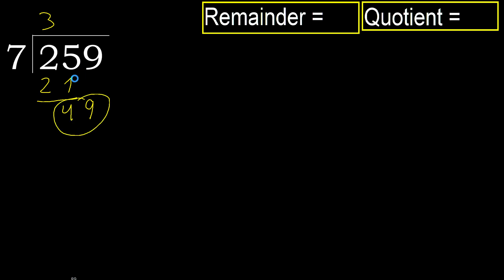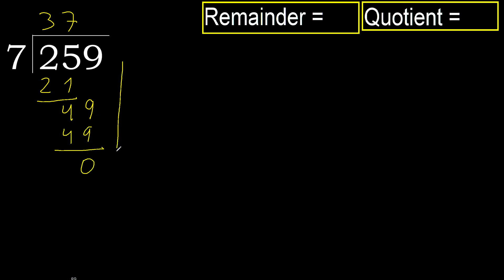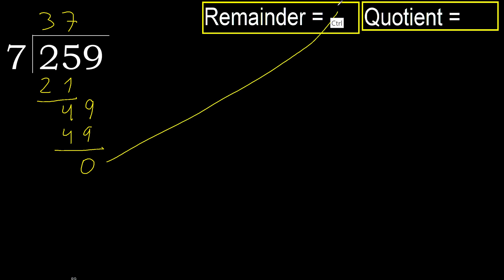Bring down: 49. 7 multiplied by 7 is 49. 49 is not greater, subtract — remainder 0. Next: there is no number, therefore finish.